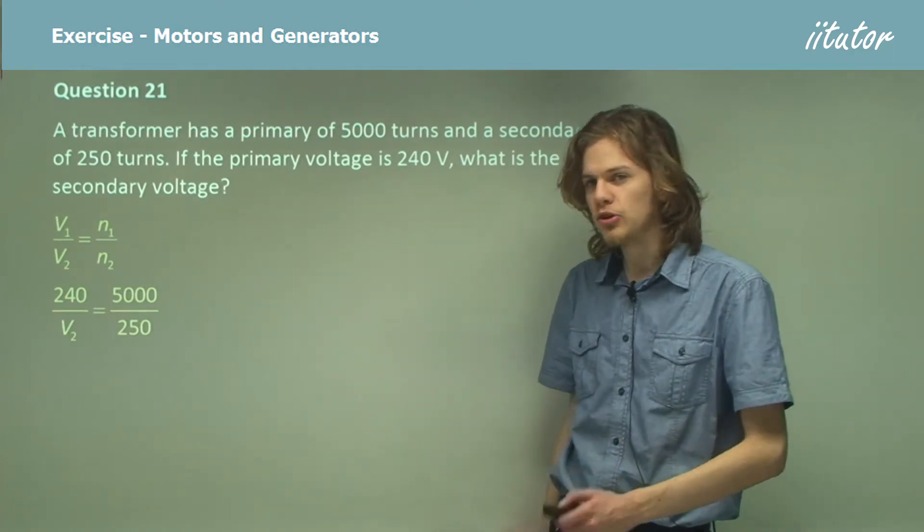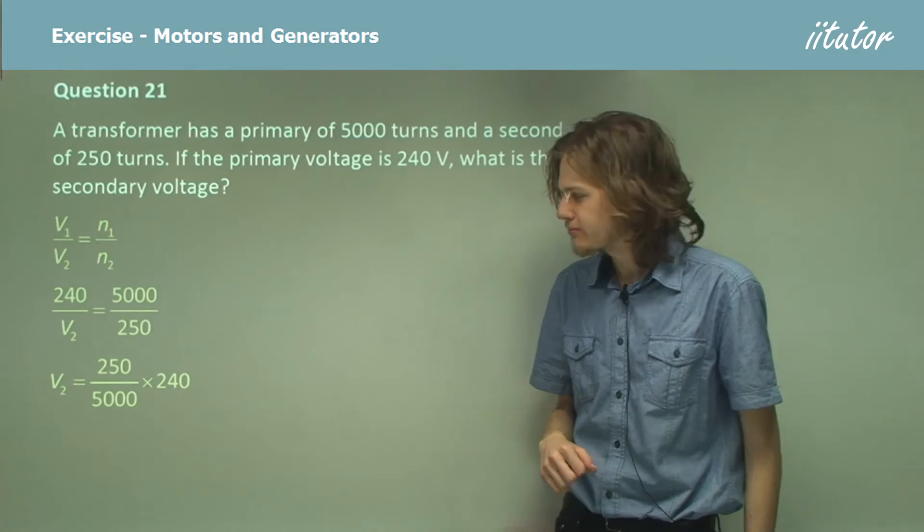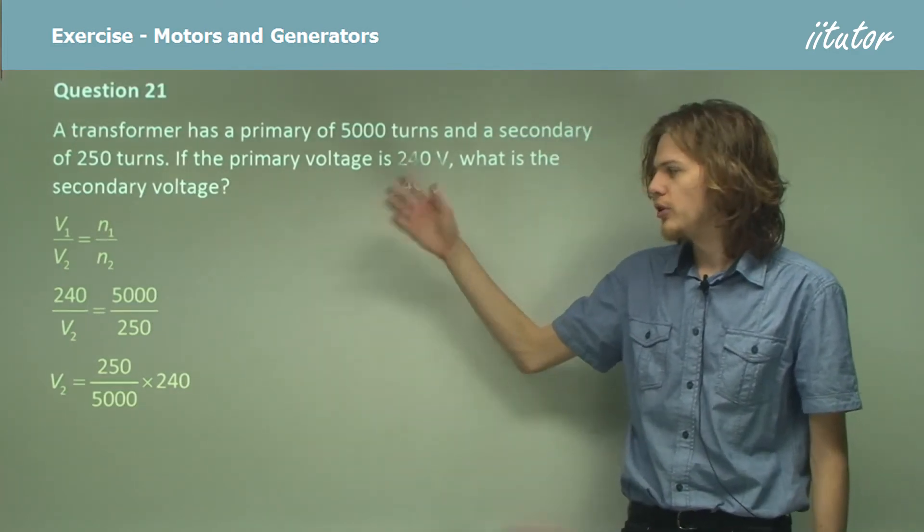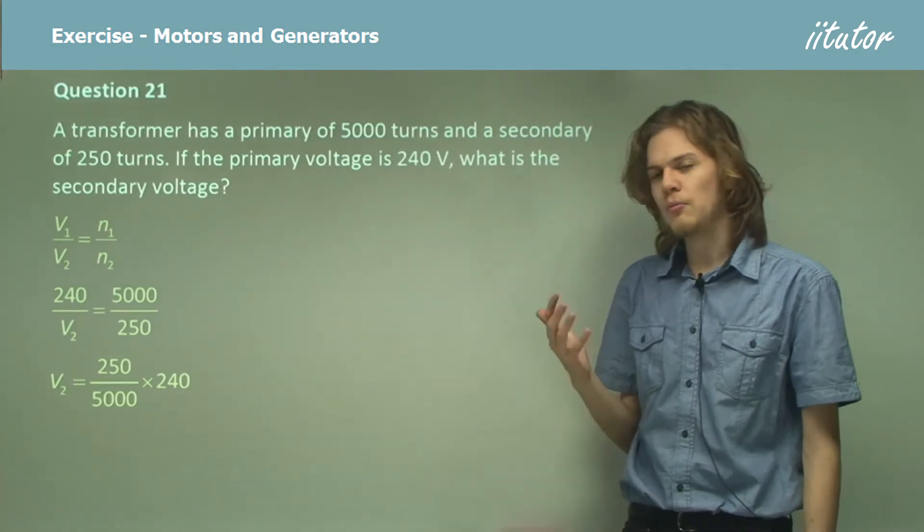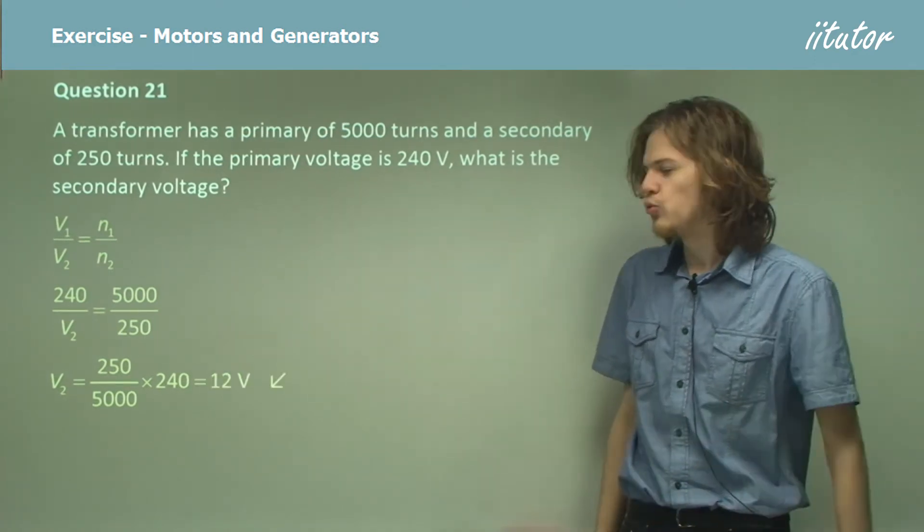We want V2 to be the subject of the equation, so it now looks like this. Obviously we've substituted in the number of coils, N1 and N2, as well as the primary voltage of 240 volts. So this will give us 12 volts.